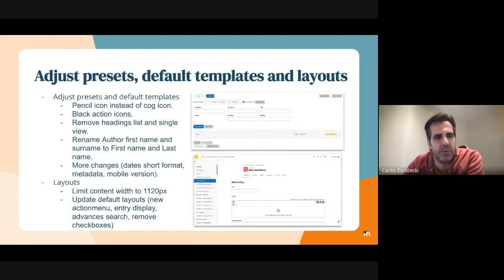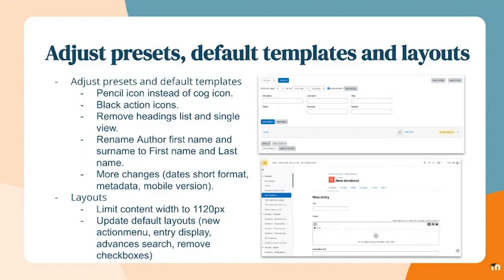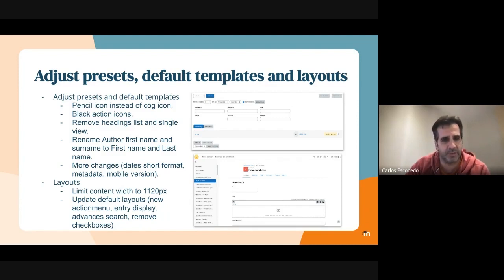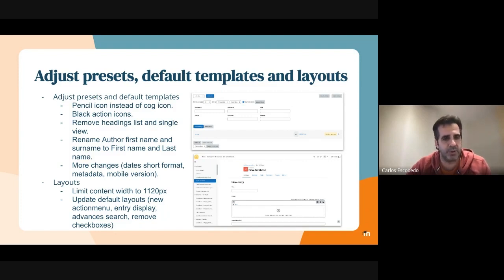The last goal was to align all the small details we had in the prototype. Now in the model, all action icons are black, we changed the code icon to a pencil icon, removed some hidden elements in the list and single view, and added some metadata. We also changed how we limit content in the layouts — there is a new content limit for layouts in the database activity, and all default layouts were updated to include the new things like checkboxes, advanced search, and check menu.